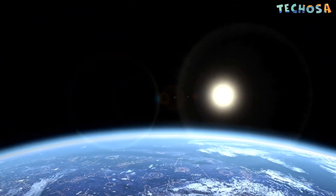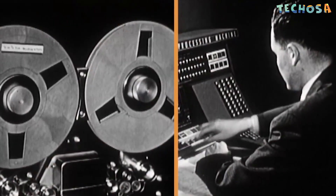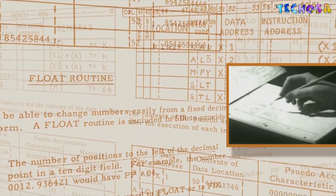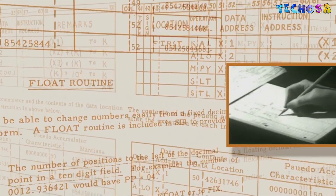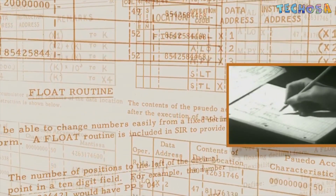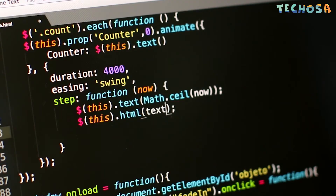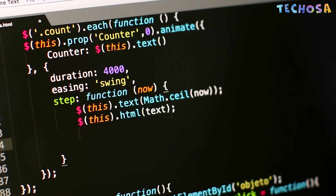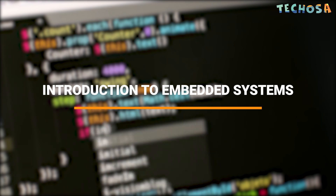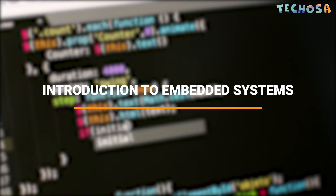Hello guys, in the last class you learned about the history of programming. Before getting into programming, we should learn about the basics of embedded systems. Today we are going to learn about embedded systems, microcontrollers and processors, and the Arduino board.